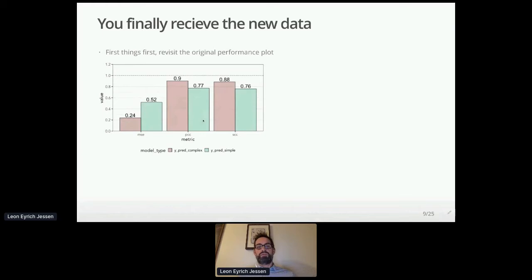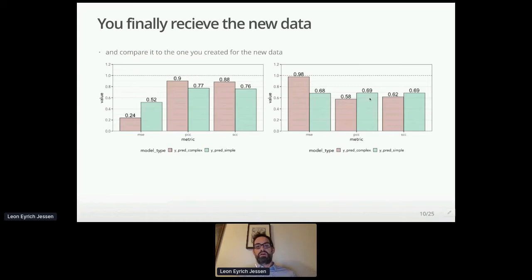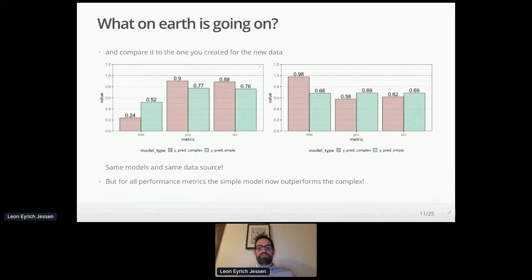You receive the new data. Before you move on, you look briefly at the original performance plot. The first model, the one you took delivery of, is doing markedly better for complex versus simple. In the new model, it's the other way around—things are acting odd. The complex is doing worse on all metrics. Now you can see that the simple model is outperforming the complex. What on earth is actually going on?